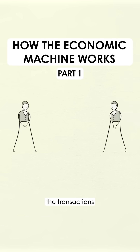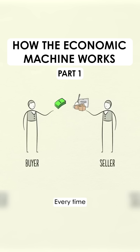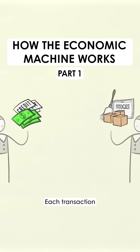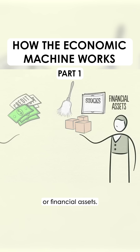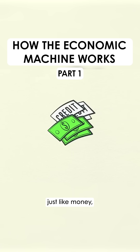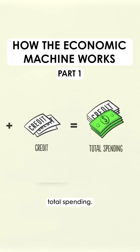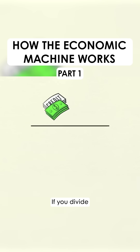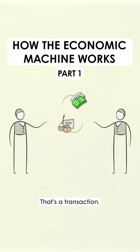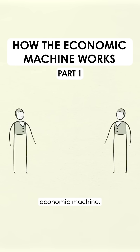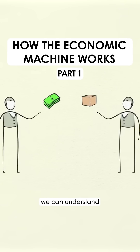An economy is simply the sum of the transactions that make it up, and a transaction is a very simple thing. You make transactions all the time — every time you buy something, you create a transaction. Each transaction consists of a buyer exchanging money or credit with a seller for goods, services, or financial assets. Adding together the money spent and the amount of credit spent, you can know the total spending, which drives the economy. If you divide the amount spent by the quantity sold, you get the price. That's a transaction — the building block of the economic machine.